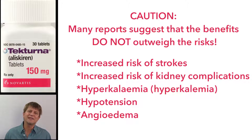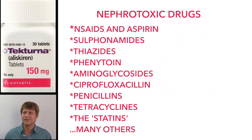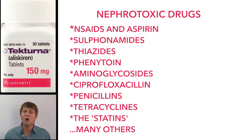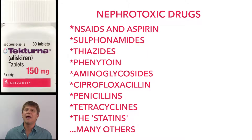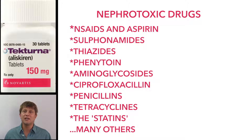An important take-home message regarding potentially nephrotoxic drugs is that history has shown we should not combine two nephrotoxic agents. Even if the label does not explicitly warn against combining it with another known nephrotoxic drug, the combination is to be avoided. For instance, a patient on Aliskiren should not be placed on a non-steroidal anti-inflammatory drug or aspirin, because these decrease the protective prostaglandins.